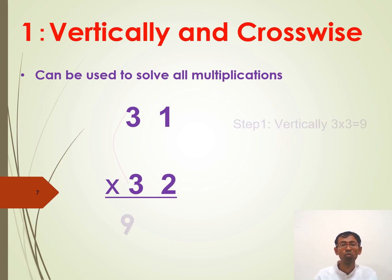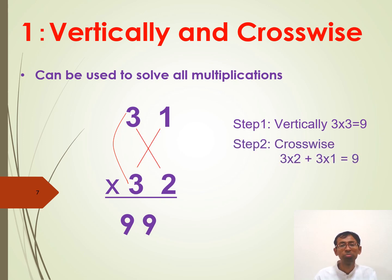We will go one by one. Step one. Vertically multiply the first digits. Three and three. Three times three is nine. Step two. Crosswise multiply and add. This is also a nine. And finally, we again multiply vertically on the right. One times two. That's two. As simple as that.